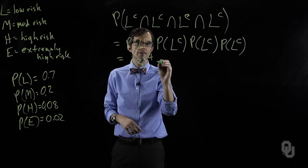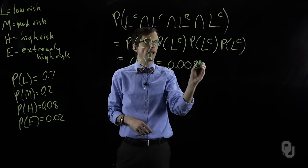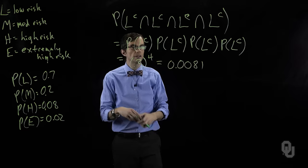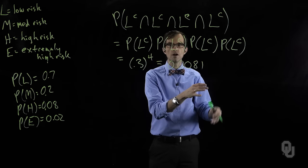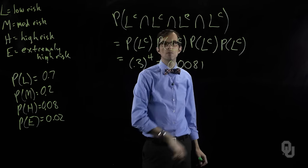Okay, and that number is point zero zero eight one. So what's the probability that if we see four projects in a row that none of them is low risk? Point zero zero eight one.